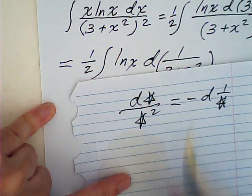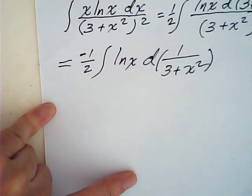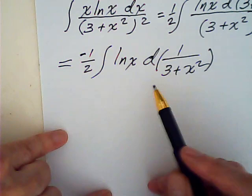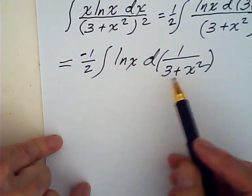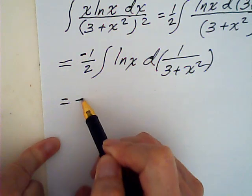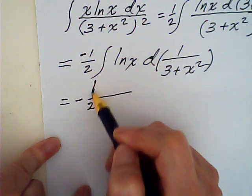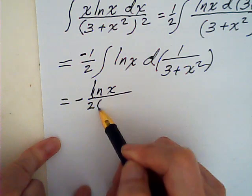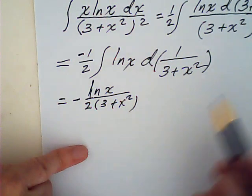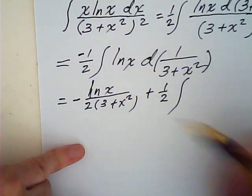The negative I can leave outside, so it equals... then I can use integration by parts. This is U, this is dV, so this is U times V. U times V minus becomes plus VdU.